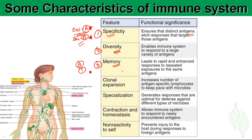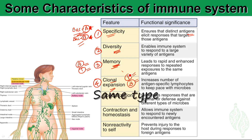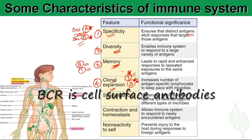When the same specific bacterium tries to invade the body a second time, those memory B cells and memory T cells mount a stronger reaction and kill the bacteria very rapidly. The fourth characteristic is clonal expansion, which applies to both T and B cells: when they encounter an antigen they clonally expand, producing large numbers of cells with the same TCR or BCR.